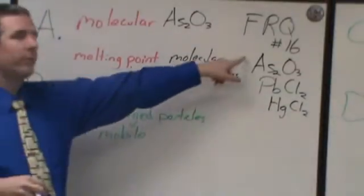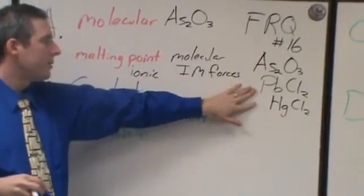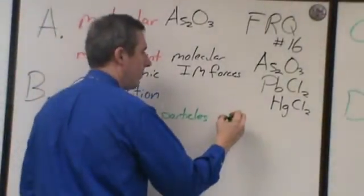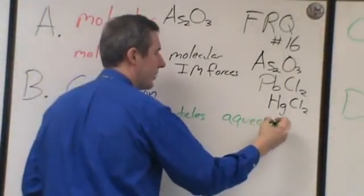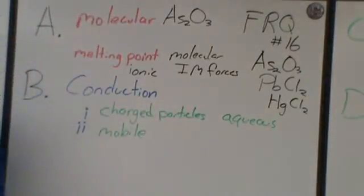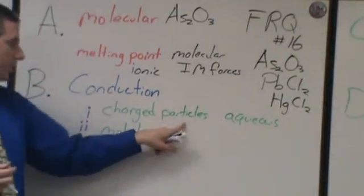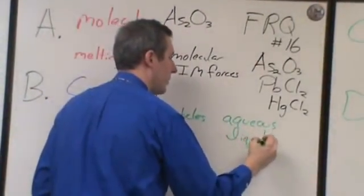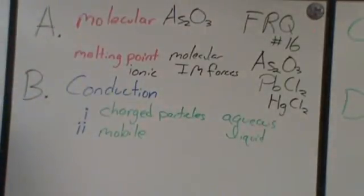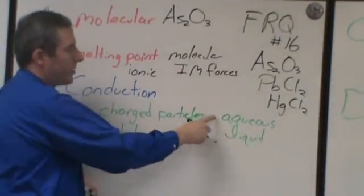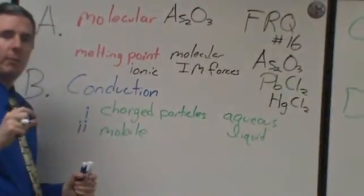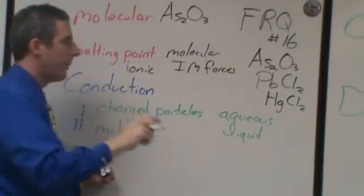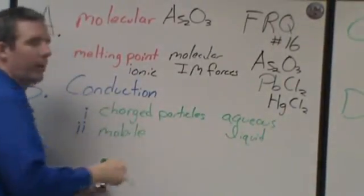Part B gets into what are some ways that this might be able to conduct electricity. When you're talking conduction in the AP exam, you want to bring up two pieces. You want to show that you know what the charged particles are, and secondly, you want to show that they're able to move, that they're mobile. Aside from the molecular compound in part one, the other two compounds, when would they be able to conduct electricity? The most common one is probably going to be when they're aqueous, when they're dissolved in water. The other one that's going to come up fairly quickly for most people is liquid.